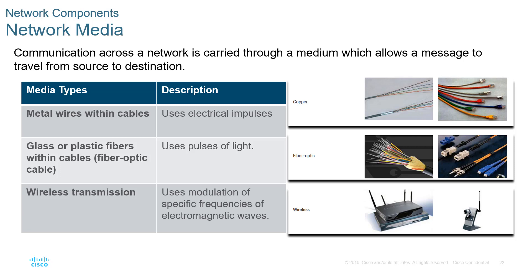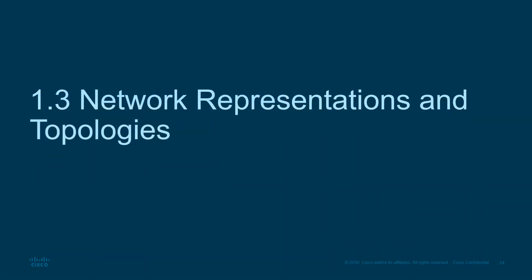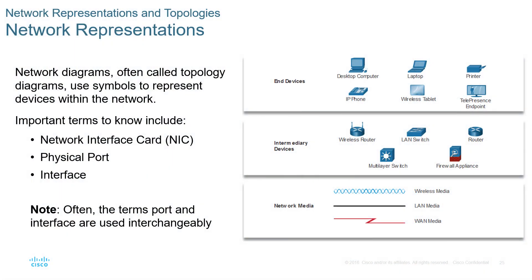The medium allows for communication between one device and another. How everything gets laid out is the representation and the topology — that's how we define how things are structured. End-devices are things like computers, laptops, printers, and phones. Intermediary devices are switches, routers, and wireless devices. Media will be wireless, copper, or fiber optic.